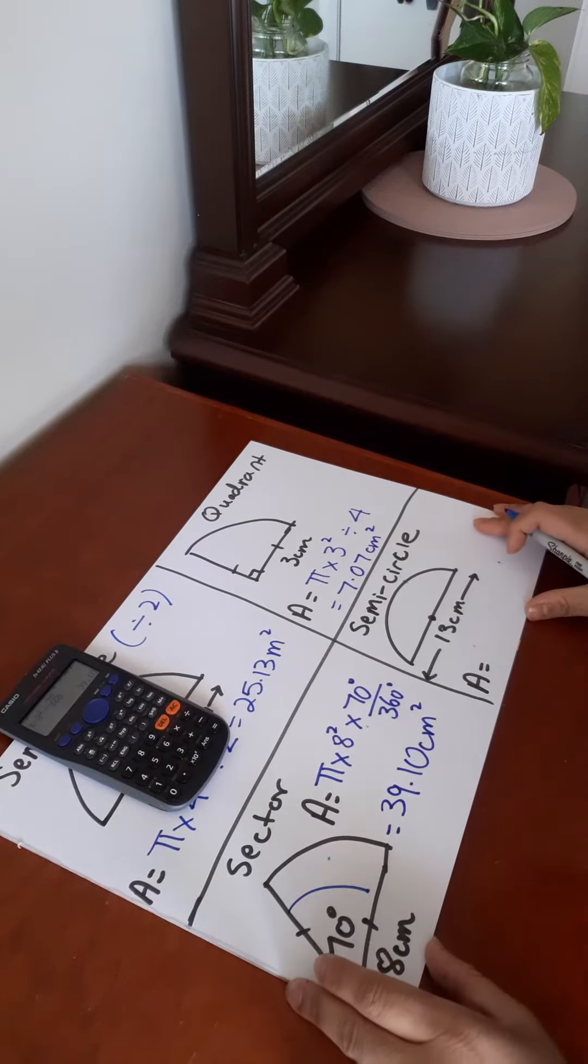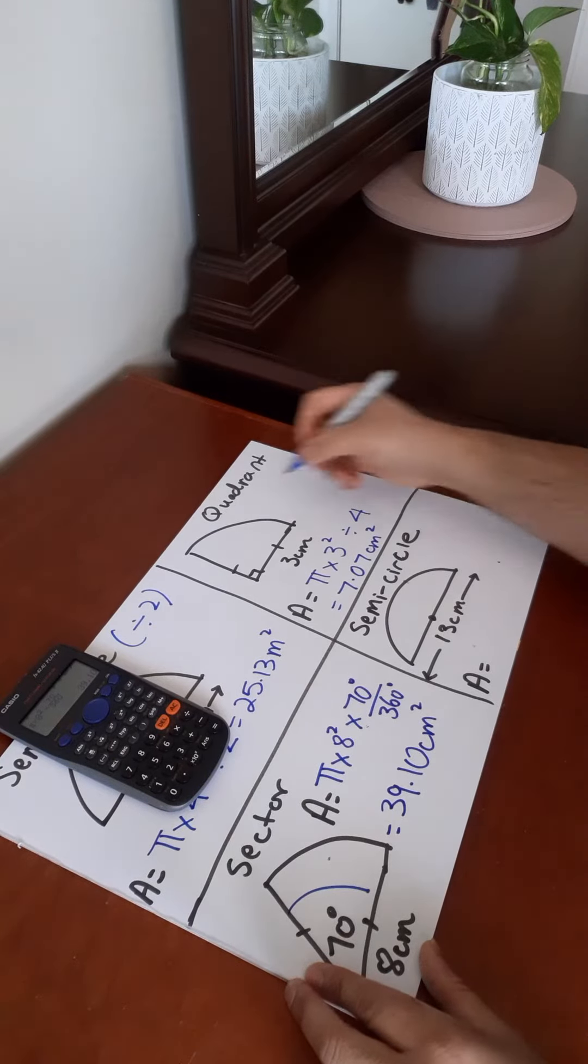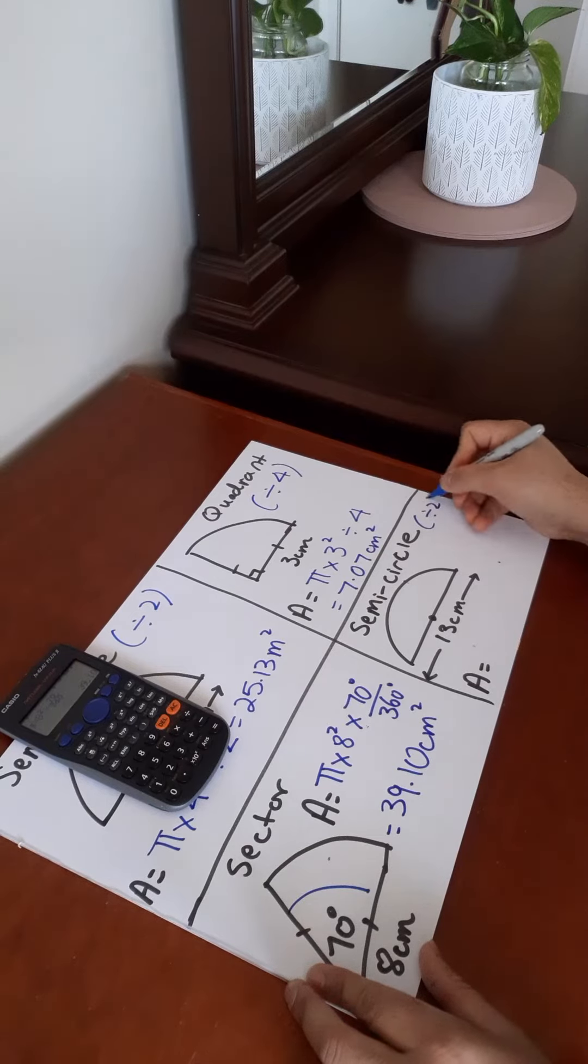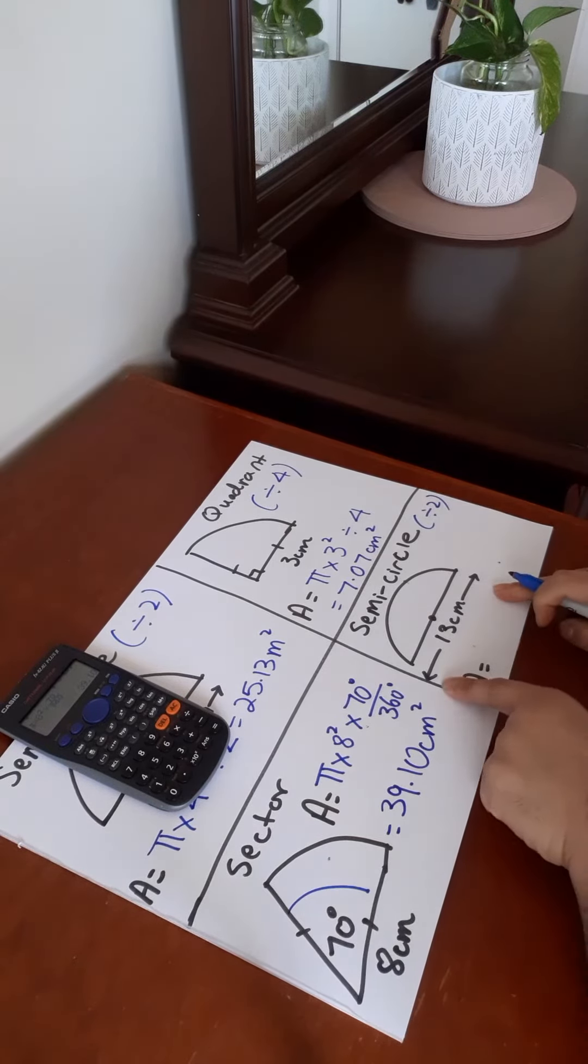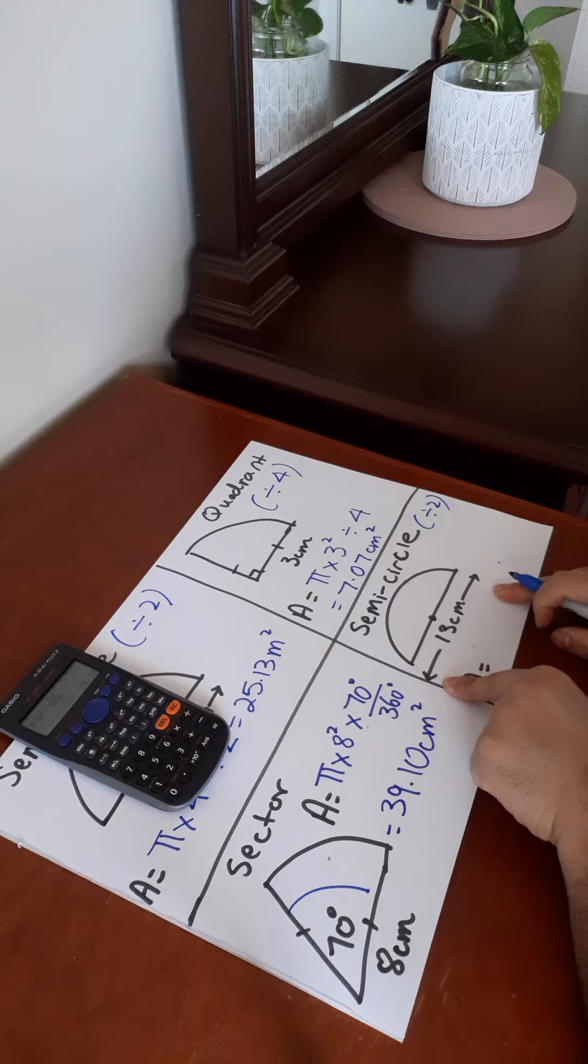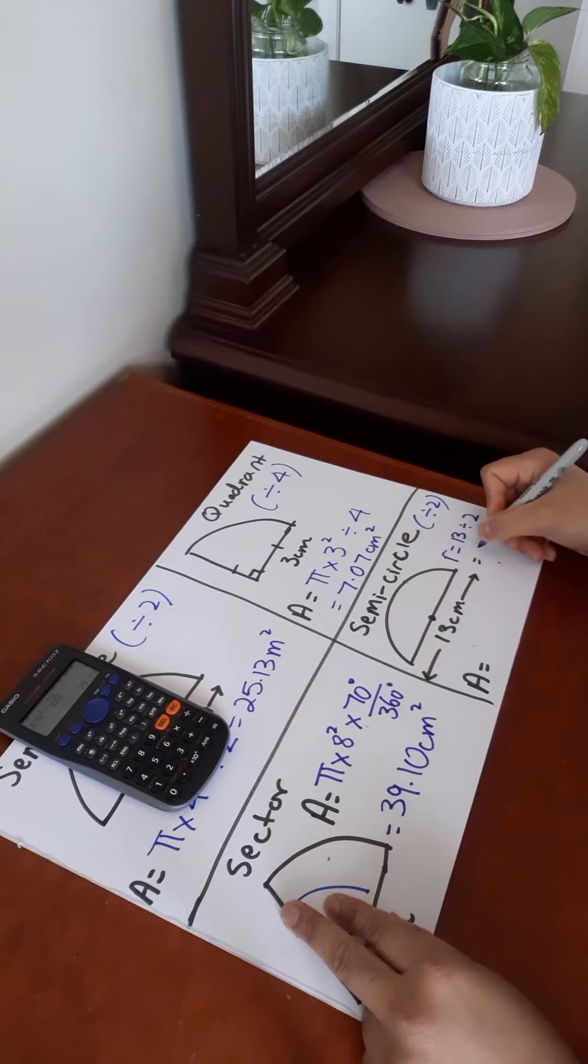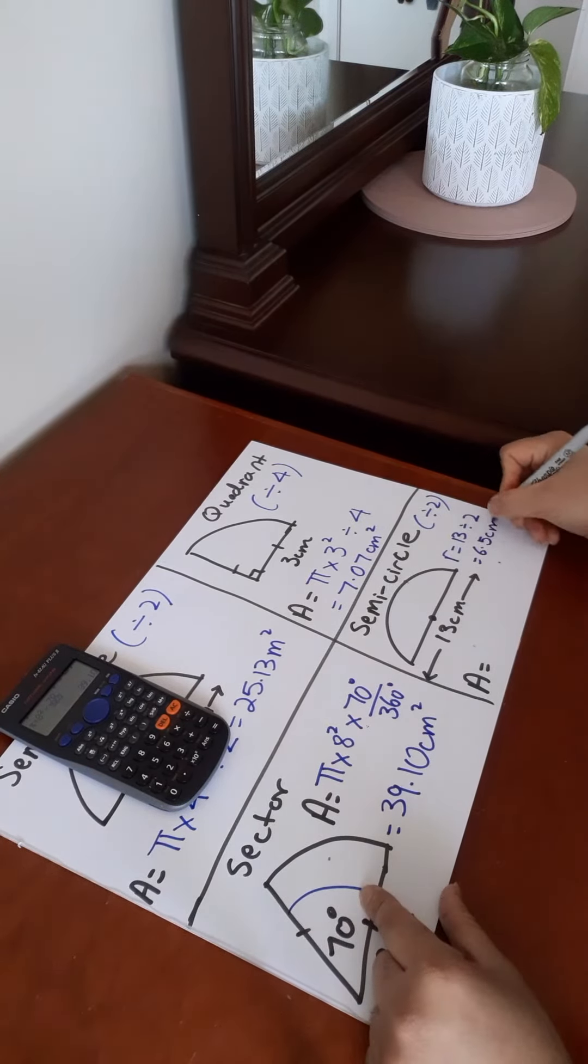The next one is a semicircle again. So that was divided by 4. Now we divide this by 2 because it's half a circle. The only difference is we've got the diameter now, which is 13 centimeters. From our previous video, radius is half the diameter, half of 13, which is 6.5 centimeters.